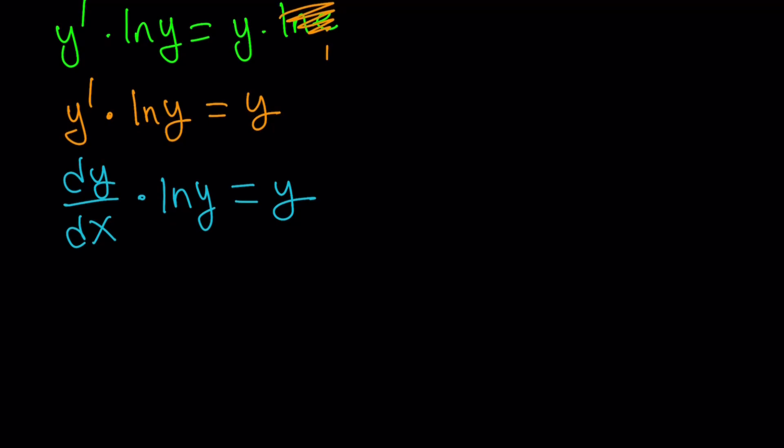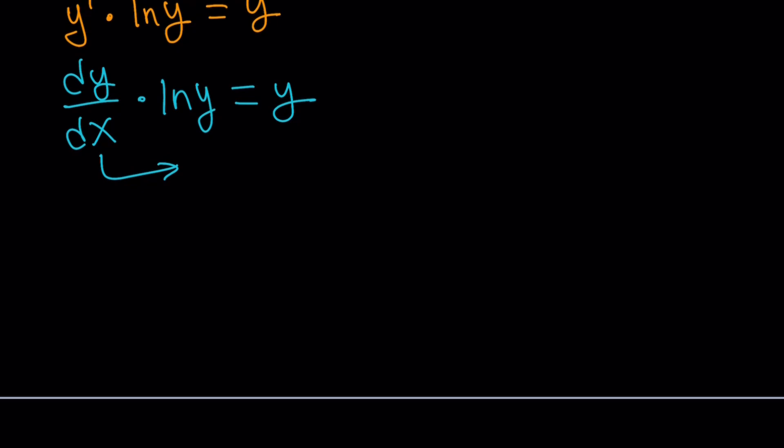dy over dx times ln y becomes y. I have ln y on the left, y on the right, so I have to bring the y over to the left and throw the dx on the other side. So it's going to look like this: ln y over y times dy equals dx. When you separate the variables, it's awesome because you can just integrate. That's what we're going to do next.